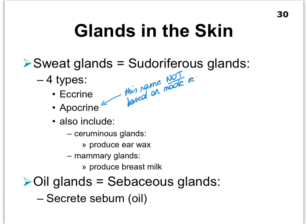We have a couple more types of sweat glands, but they are very modified sweat glands, believe it or not. Your glands that produce ear wax in your ears are called the ceruminous glands, and they are a type of modified sweat gland, and so are our mammary glands. The second major type of gland are the oil glands, also referred to as the sebaceous glands because they secrete an oily substance called sebum.